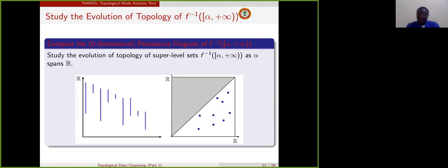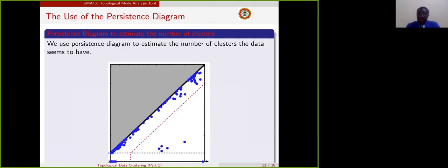When we do it, we can then use persistent diagram to detect the real cluster and the noise. So the points that are very close to the diagonal represent noise and those that are far away from the diagonal represent our clusters.